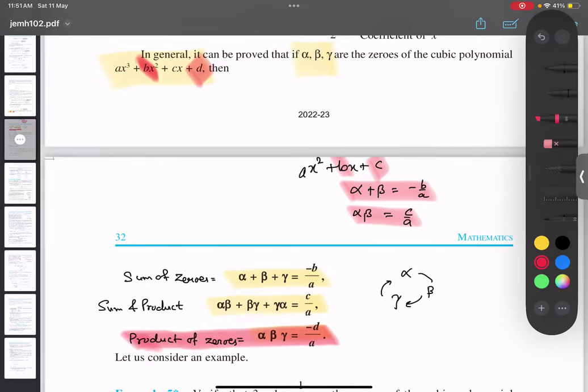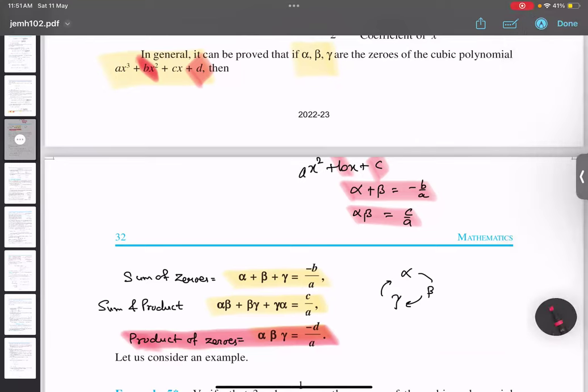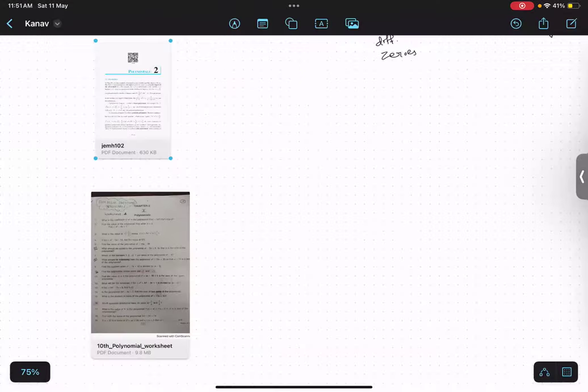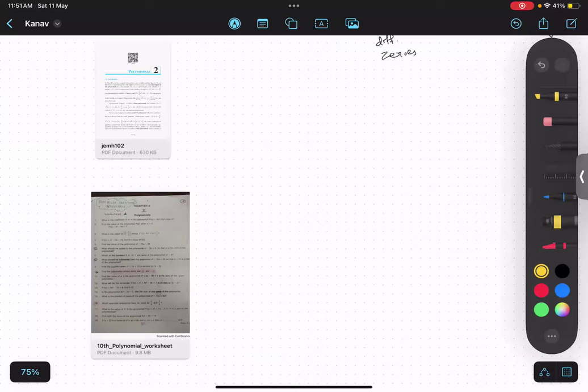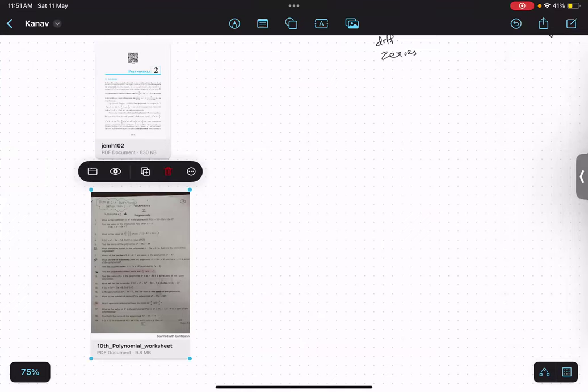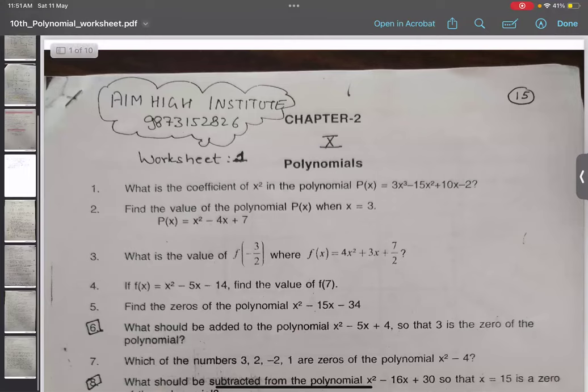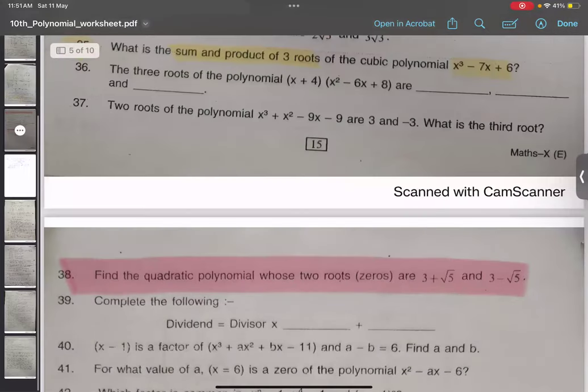Okay. Minus b by a. So, this is in the book itself. You can note on this thing. Later on, it is on page number 32. So, you can do that. Let me just come back to this thing, this question.